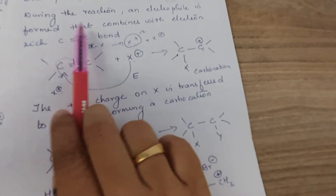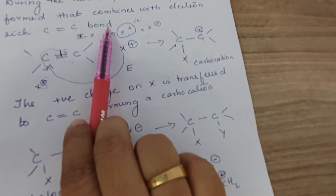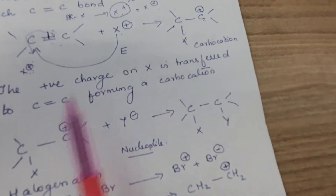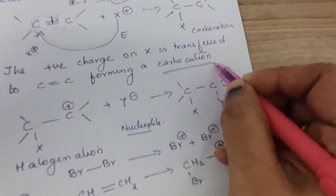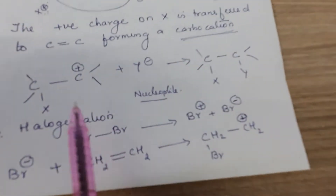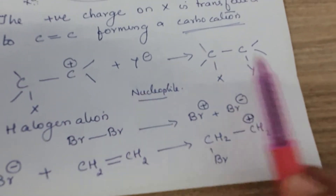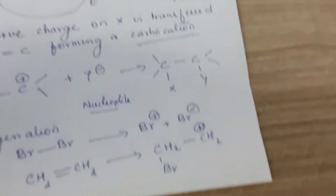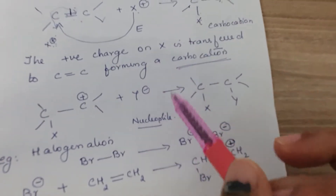The positive charge on X is transferred to carbon of the C=C double bond, forming a carbocation. This is the first step of the mechanism. Then the carbocation is stabilized when a nucleophile attacks it to form a stable compound. For example, with ethylene, these are the theoretical mechanism steps involved.